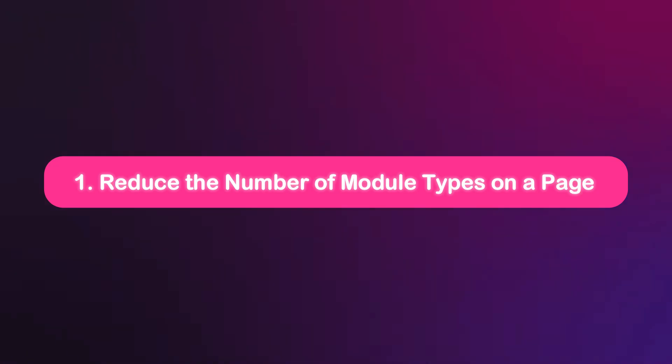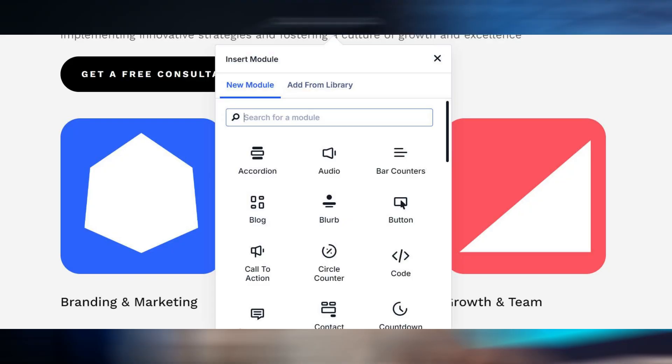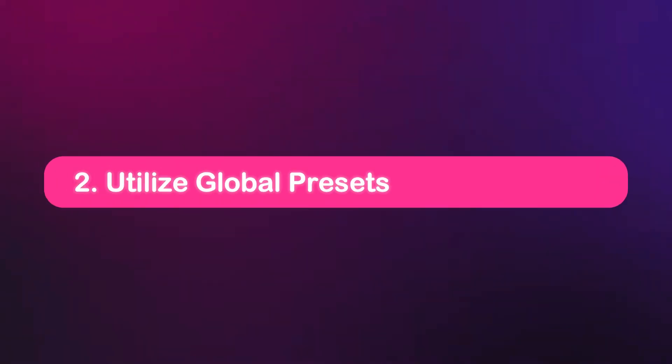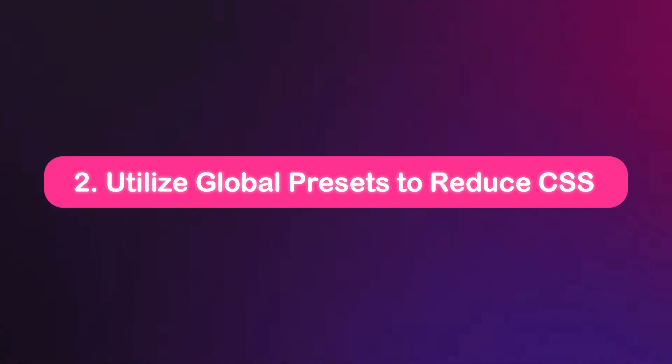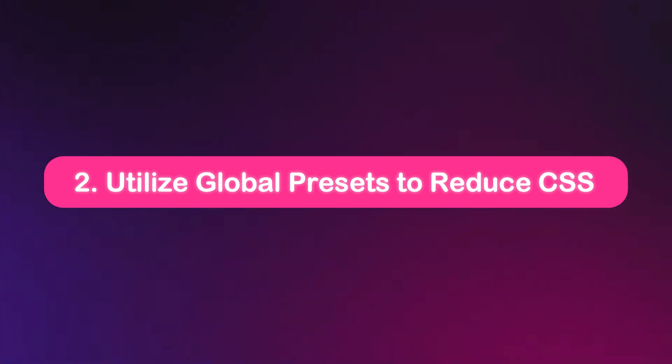Divi 5 is designed to load only the assets you need for each module, but using too many different module types can still add extra resources. For example, instead of using several different modules for similar designs, save pre-designed modules, sections, or layouts in the Divi Library or Divi Cloud. This ensures consistency while keeping your website lean and fast.